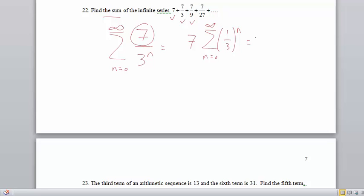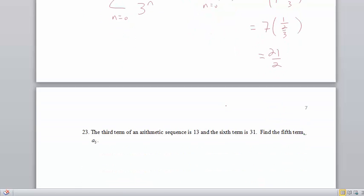Remember, one over three to the n is the same thing as one-third to the n. So I can really see that value of r. So that's just seven times one over one minus r, which in this case is a third, which is seven times one over two-thirds, which is seven times three-halves, which is twenty-one over two.